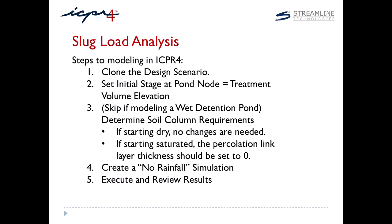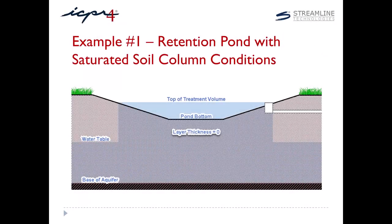You can then review the pond stage results as a function of time. Our first example includes a pond located in a region where the review agency requires a saturated soil column at the start of the slug load analysis. This approach considers that the pond would stage up to the treatment volume elevation only after some initial percolation takes place and saturates the soils below. Recall that the layer thickness parameter defines the region where unsaturated vertical flow can occur, but in this case there is no unsaturated region in the soil column.